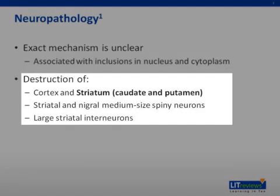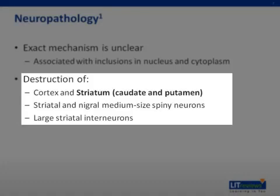What is known is that the affected huntingtin protein leads to inclusions within the nucleus and cytoplasm, leading to destruction of the cortex, but mainly a very selective area of the brain called the striatum, which is composed of the caudate and putamen. Specific neurons in these areas being most damaged include striatal and nigral medium-sized spiny neurons and large striatal interneurons.